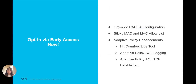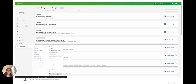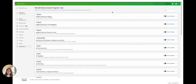I am excited to share a brief update on features currently available on the dashboard for you to experiment with. Available today, you can explore organization-wide RADIUS configuration, support for Sticky MAC and MAC Allow List, and various enhancements to adaptive policy, like the HitCounters Live tool, Adaptive Policy ACL Logging, and Adaptive Policy ACL TCP Established. For additional information, navigate to your cloud dashboard, go to the organization tab, and click Early Access. You will find all switching-related features tagged on this page, along with corresponding documentation links.